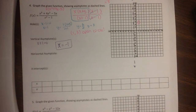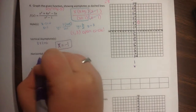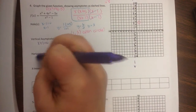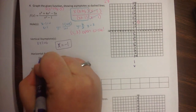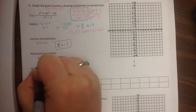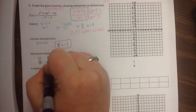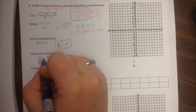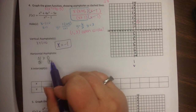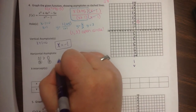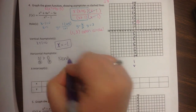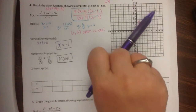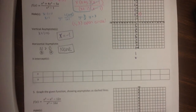Now for horizontal asymptotes, I need to look at the degree. The degree of my numerator in my original problem is 3, and the degree of my denominator is 2. Remember, the degree is the exponent. When the degree of the numerator is larger than the degree of the denominator, I have no horizontal asymptotes. I may have an oblique or slant asymptote, but we're not going to make you find that.